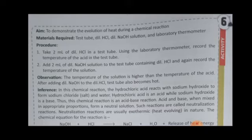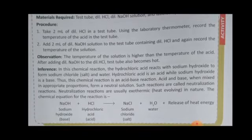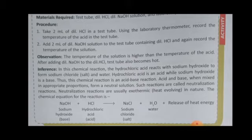The conclusion is: hydrochloric acid reacts with sodium hydroxide to form sodium chloride (table salt) and water. Hydrochloric acid is an acid and sodium hydroxide is a base. This is an acid-base reaction. When mixed in appropriate proportions they form a neutral solution — such reactions are called neutralization reactions. In a neutralization reaction, acid neutralizes the effect of base and base neutralizes the effect of acid. The chemical equation shows the release of heat energy, which is why the test tube becomes hot.